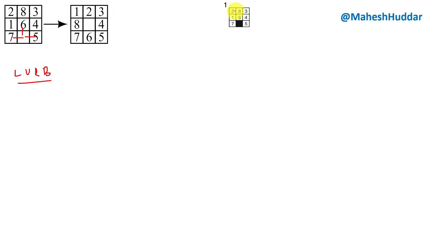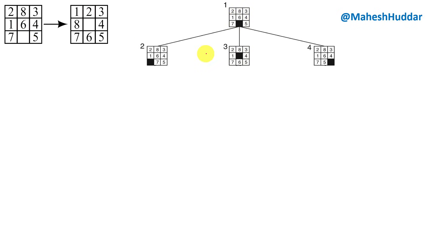In BFS, first we check whether the initial state is the goal state. Comparing initial with goal, it is not a goal state. So we perform the different possible moves. In this case we can perform three moves: move the blank left, up, or right. Once we perform all these possibilities we get three new states. We compare these states with the goal state — none of them match, so we need to expand them.